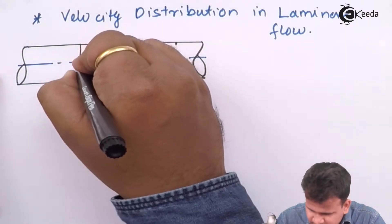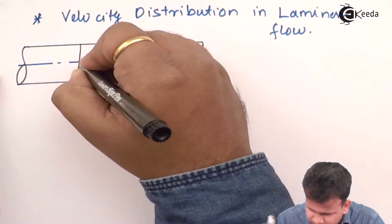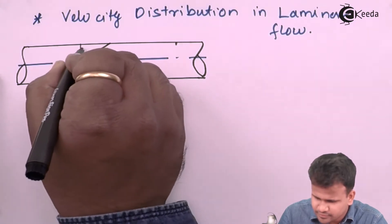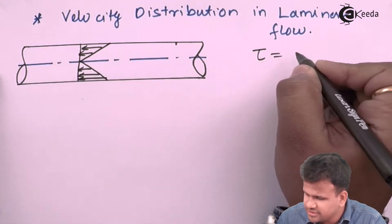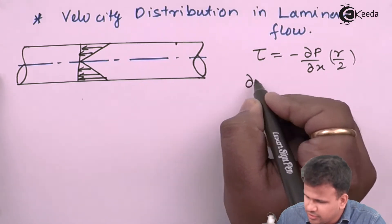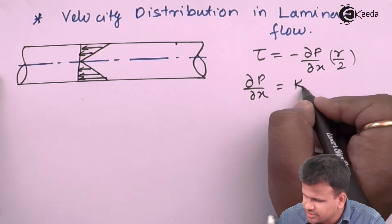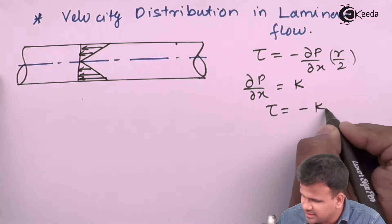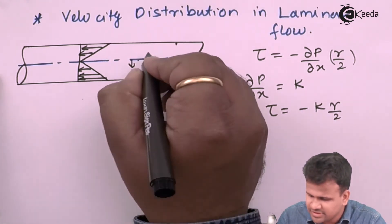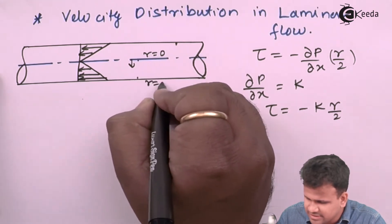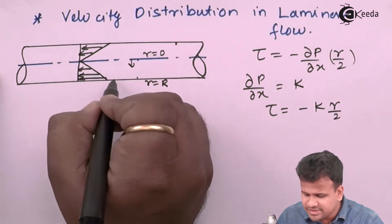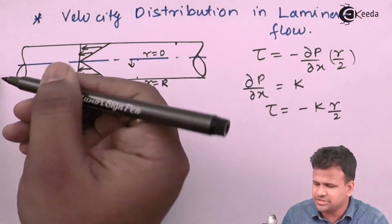Previously, we have seen the shear stress distribution for laminar flow. That was governed by the equation tau equals minus (∂p/∂x) times r by 2. Since ∂p/∂x is a constant term, we wrote tau equals minus k times r by 2. As we increase the radius from the center to the circumference, from r equals 0 to r equals capital R, the shear stress gradually increases, but in the opposite direction — that is the significance of the negative sign.